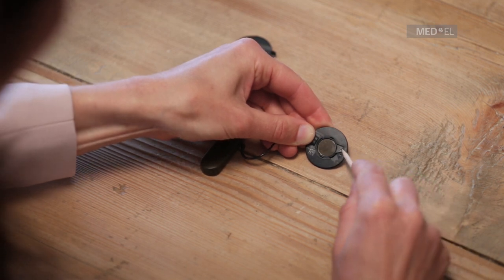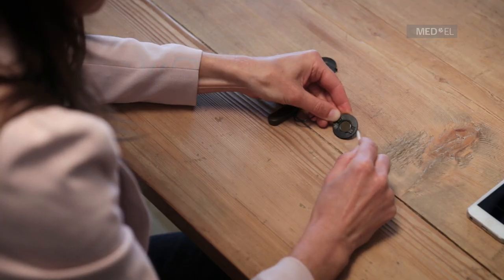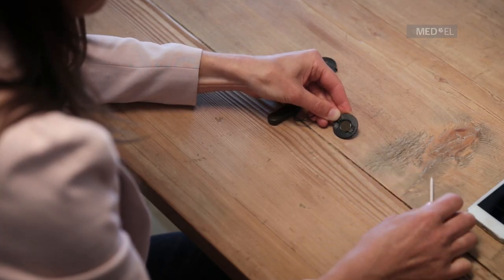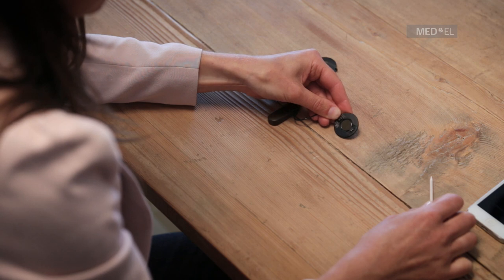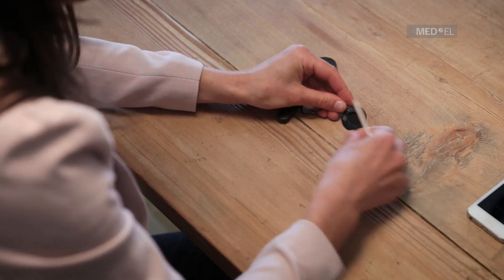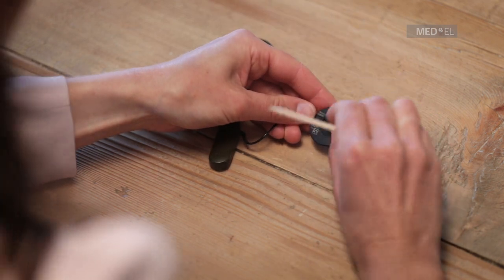To replace the magnet, your clinician should align the magnet to the center position, tilt the magnet out of the DL coil, and insert the desired magnet with the tab aligned to the center position.